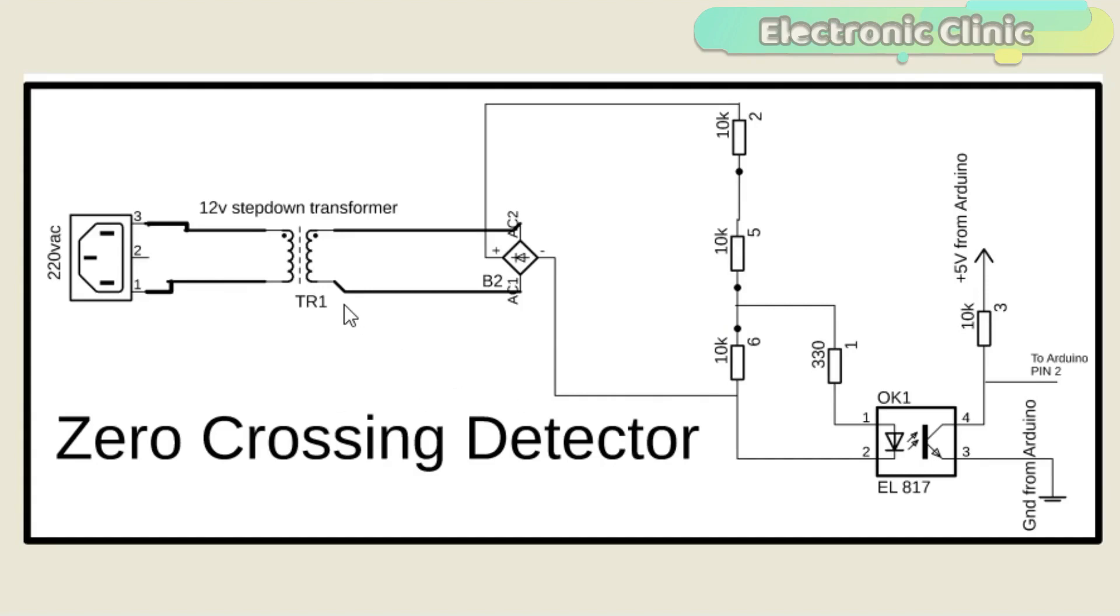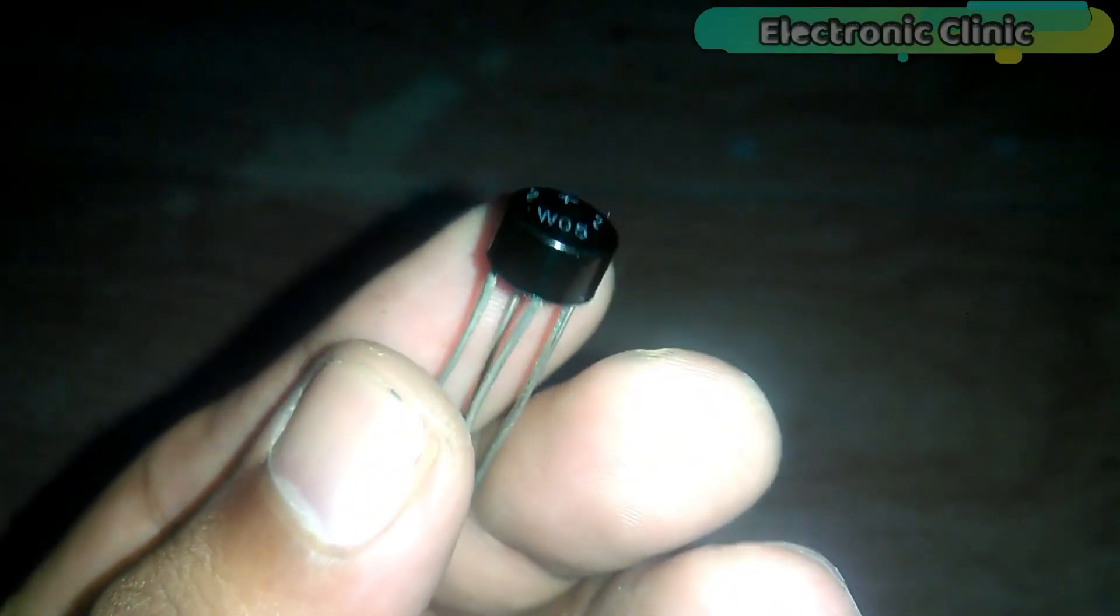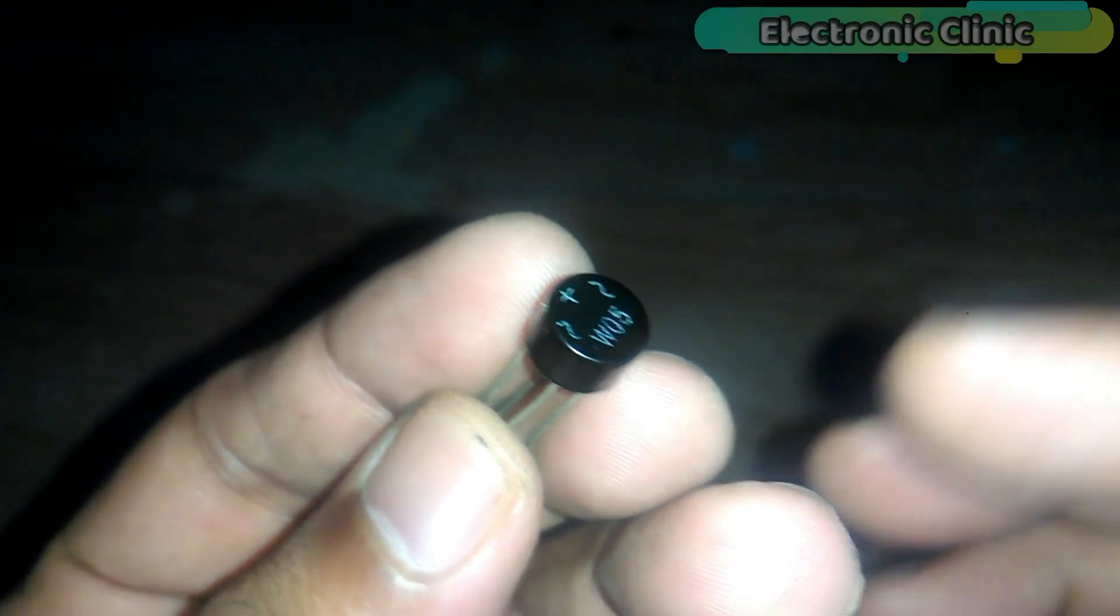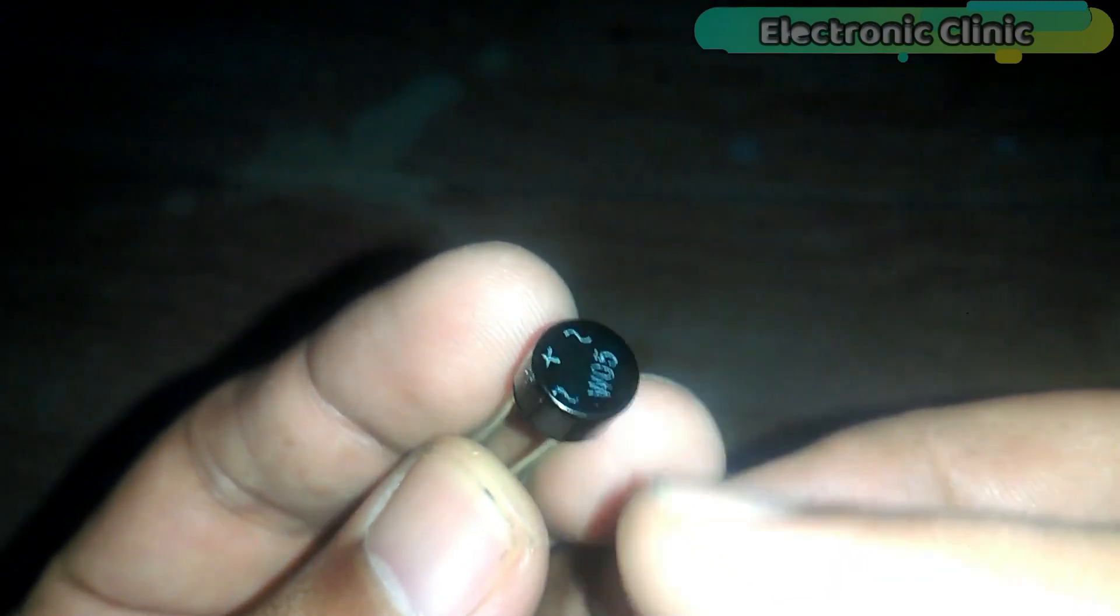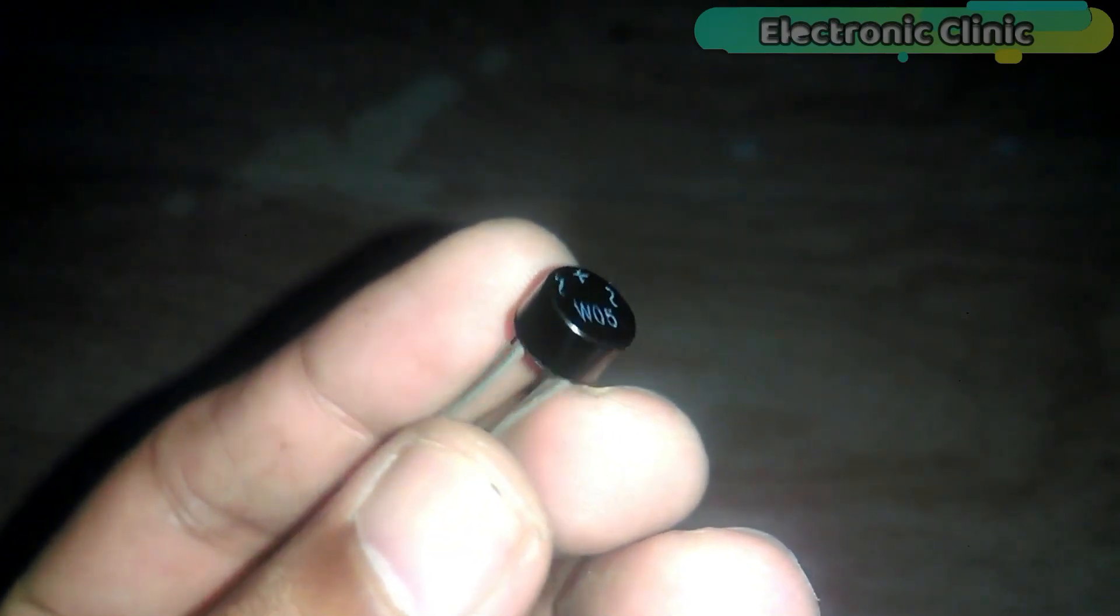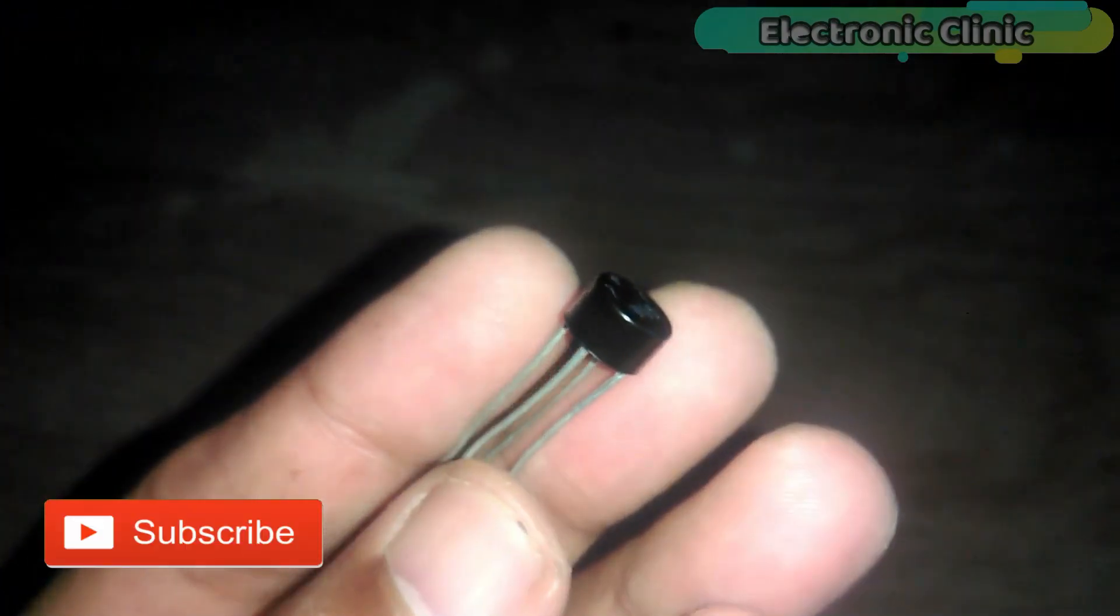The zero crossing detector circuit is very simple. Let's start with the 12 volt step down transformer. You can use a 220 volt or 110 volt to 12 volt transformer. The secondary side of the transformer is connected with the AC input legs of the bridge rectifier. This is the bridge rectifier. As you can see it has four legs: two legs are labeled with the AC signs and two legs are labeled with the plus and minus signs. The purpose of the bridge rectifier is to convert the AC into DC.